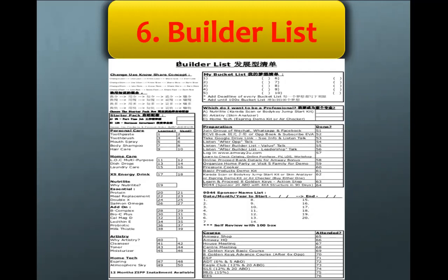The Builder List is the first step you want to deliver to your partner. The first concept is Change Use No Share. There are two language versions — English and Chinese. Today is the English version. The Change Use No Share concept means: you change, then you use the products, you know the products, you share, and you earn. If you change less or slow, then you will earn less and slow.